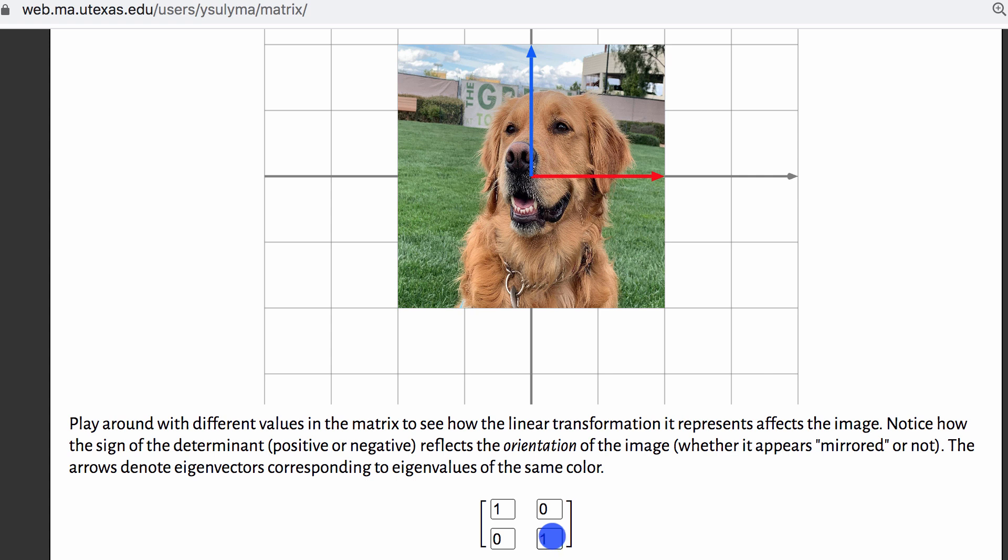So in this transformation matrix, if I go from the identity matrix here, but instead of zero, one, I now, it will no longer be the identity matrix. If I put a negative one here and when I press enter, this should flip this blue vector over the X axis and essentially flip everything else with it.